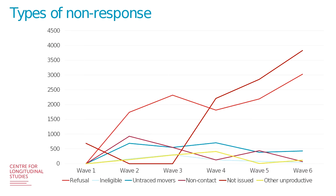On this chart, you can see that the number of refusals and the number of not-issued cases are increasing over time, while the other types of non-response are more or less stable — they are fluctuating. This is because some of them, when absent for more than two waves, are moved to the not-issued category.